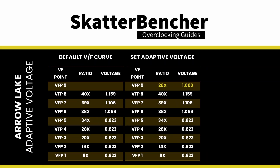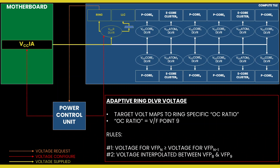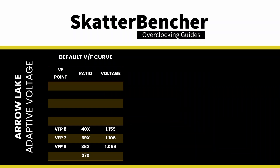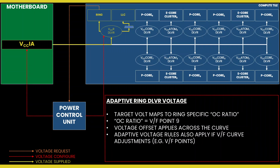For example, let's say you set the maximum ring ratio to 28x and the adaptive voltage to 1 volt. In that case, VF point 9 will be programmed to 28x at 1 volt. However, the actual frequency will be 2.8 GHz with 1.159V — that's the voltage for VF point 8. Rule number two: for ratios between the OC ratio and the next highest factory fused VF point, the voltage is interpolated between the set adaptive voltage and the factory fused voltage. For example, if we configure the ring VF OC point to 45x and 1.35V, the target voltage for ring ratios between 40x and 45x is interpolated between the factory fused voltage for 40x and the set adaptive voltage for 45x. The adaptive offset is applied across the entire curve, so a +100 mV adaptive offset increases the operating voltage for all frequencies between 8x and the OC ratio by 100 mV.